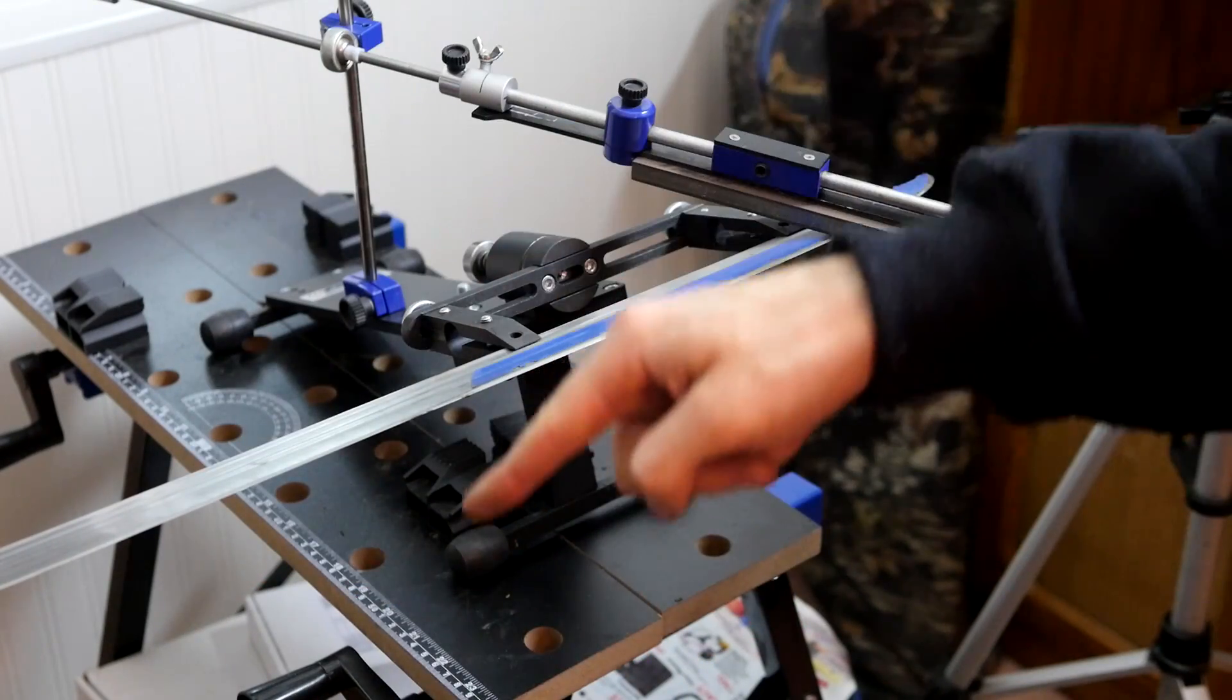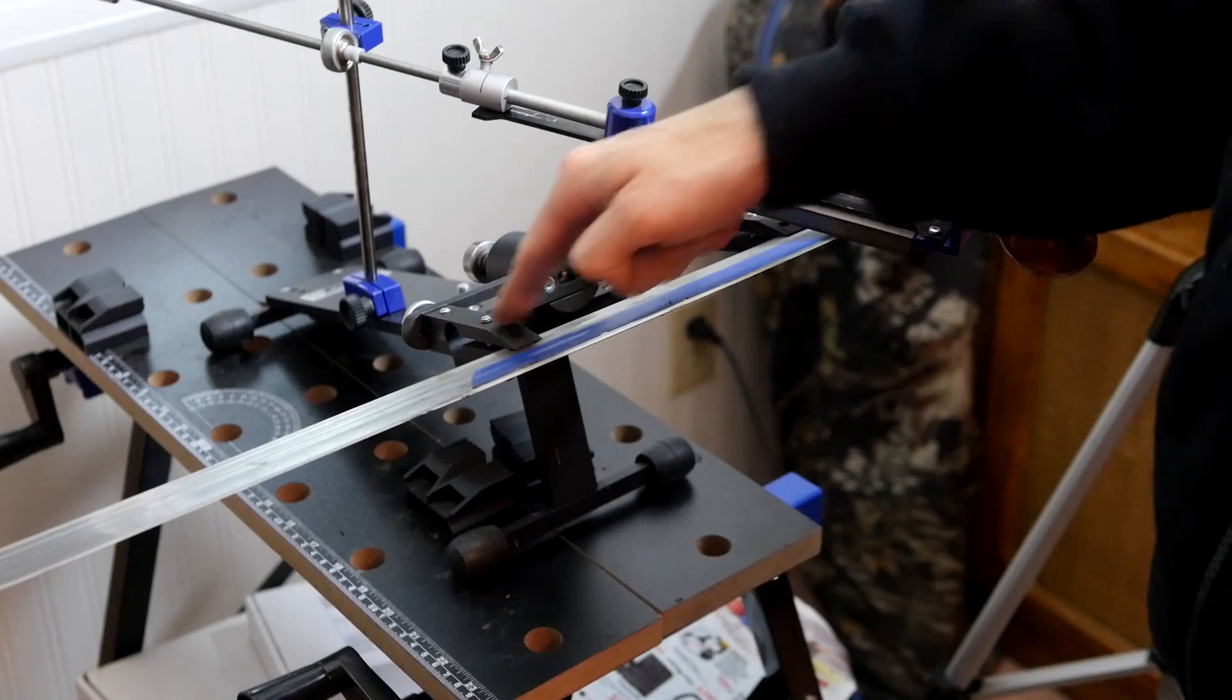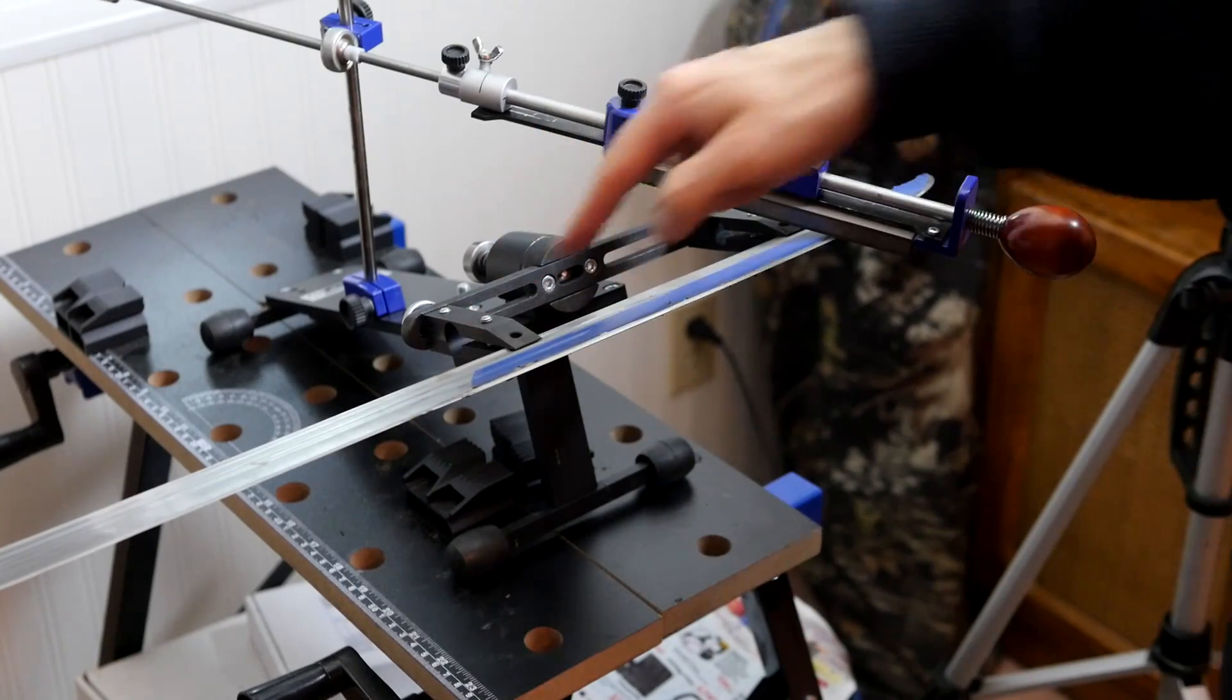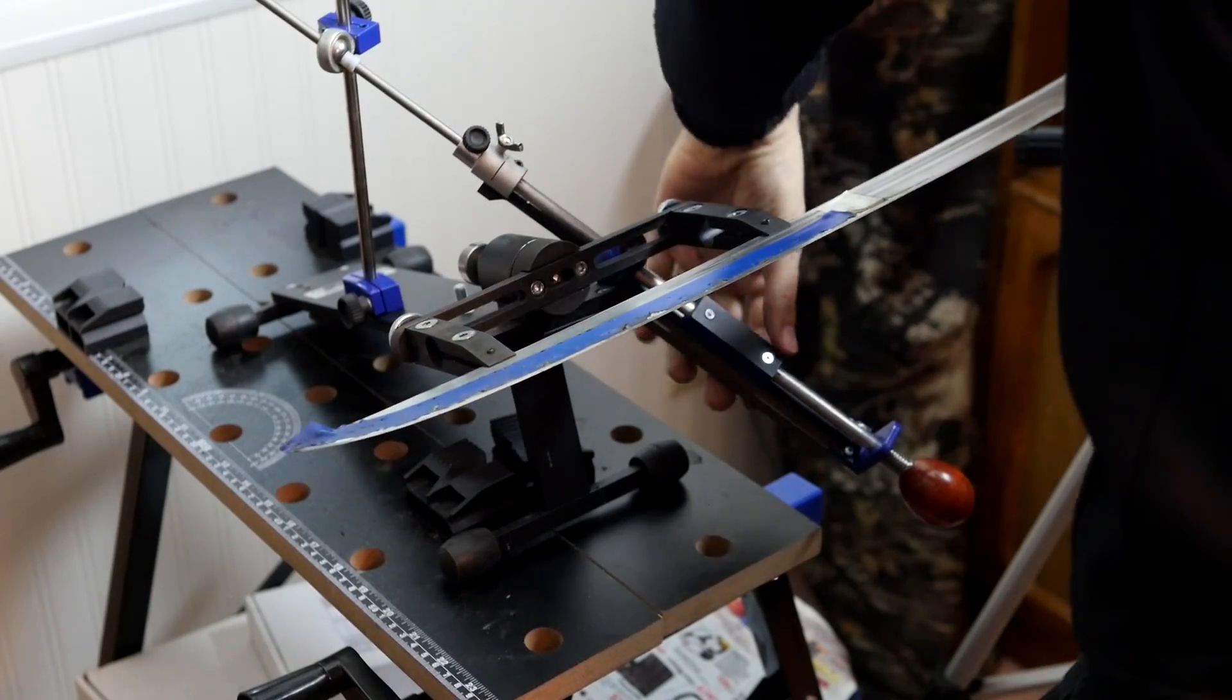What I really appreciate about the deluxe version here is that in order to flip this over to work the other side, I don't even have to remove this from the clamps. All I need to do is just flip it over and there you go.